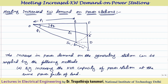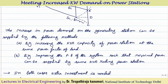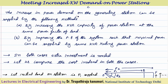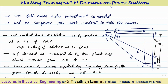These are the two methods. Let us see which method will be better and how to calculate the economics and compare them. The increase in power demand on the generating station can be supplied by: first, increasing the KVA capacity of the power station at the same power factor of the load; second, improving the power factor of the system such that the required power can be supplied by the same KVA rating power station. In both cases, there is a cost involved.